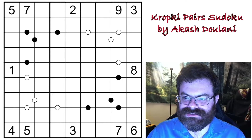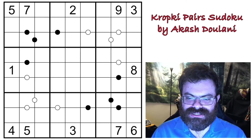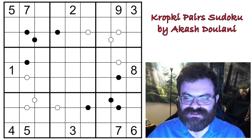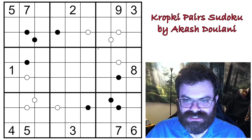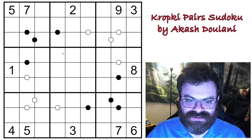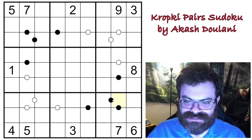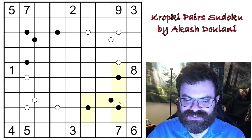Please feel free to try it out at the link below before you watch my solve. I'm going to start solving now. The first thing I like to look at in these is that black dots are limited in which values can be on them.